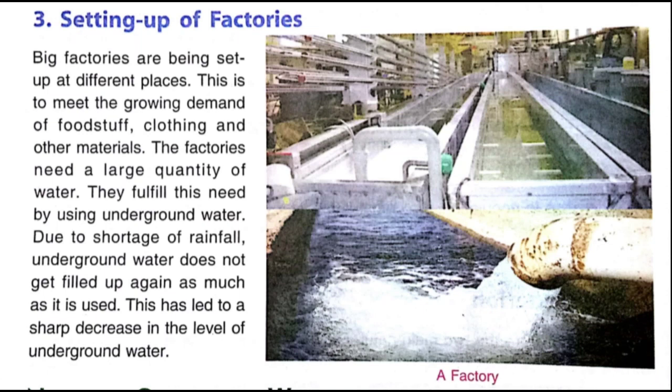At the rate factories use underground water, it is not replenished enough due to shortage of rainfall, and we keep removing it. Due to this, underground water levels are also reduced. Plants get water from underground water through their roots, so if underground water shortage continues, plant roots will not be able to absorb water and plants will not be able to survive.